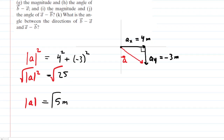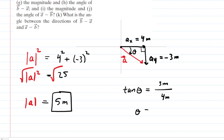That's the correct answer to part A. In part B we need this angle, which we'll call theta. Studying the right triangle carefully, the tangent of theta equals the side opposite theta — which is 3 meters — over the side adjacent to theta, which is 4 meters. We use 3 meters (not negative) since we just want to calculate the angle. Taking the inverse tangent of both sides, we get the inverse tangent of 3/4. With your calculator in degree mode, theta is about 37 degrees.